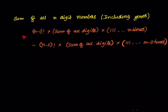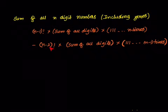We know that whenever we start with 0, it won't be an n digit number. If you want 3 digit numbers but the first digit is 0, it becomes a 2 digit number. So we have to subtract all numbers starting with 0. That is (n-2) factorial into sum of all digits into 1, 1, 1 written n minus 1 times.